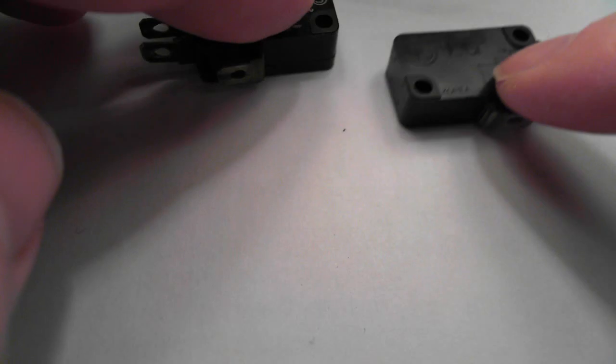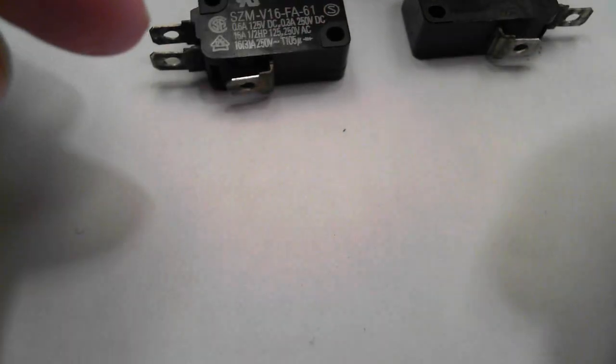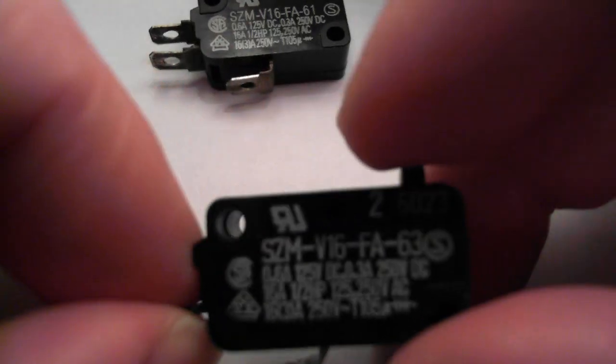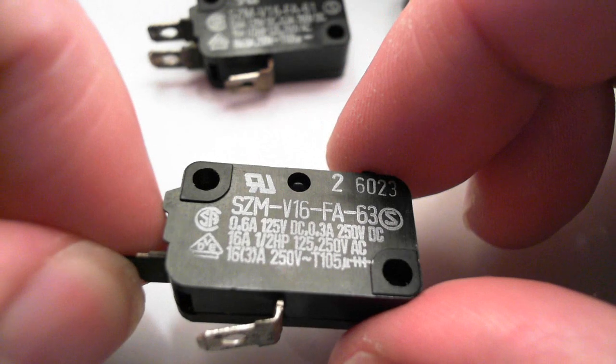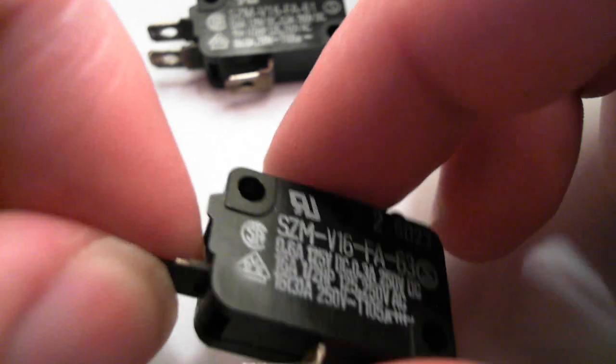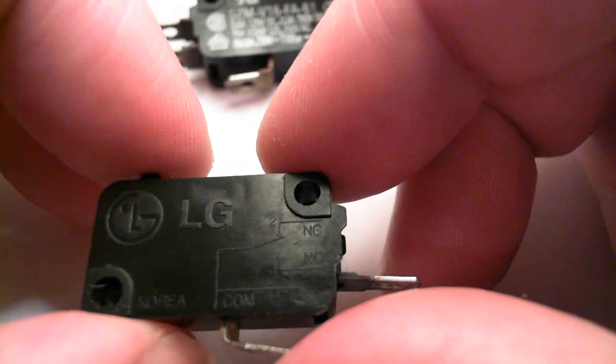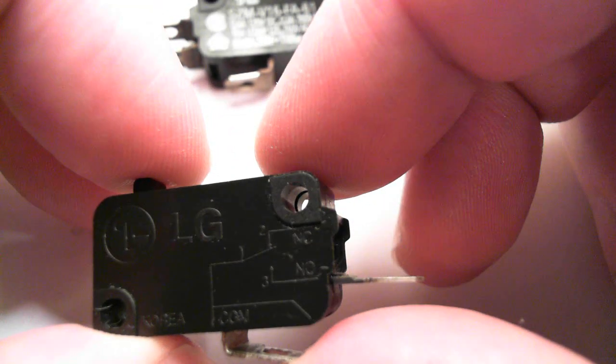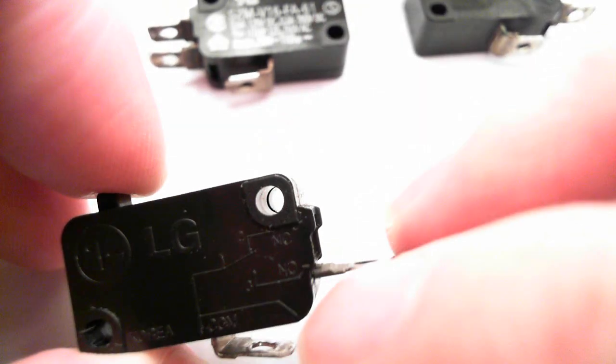I am sure you know what SPST and DPDT etc are. For double pole, double throw, single pole, double throw. Another single pole, single throw here. Yet again. This one is normally open. Push to close. You see this. Let me show you again.